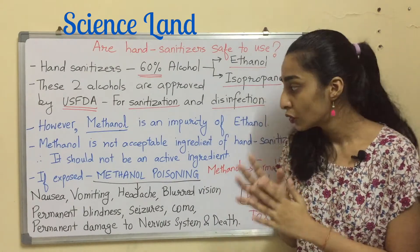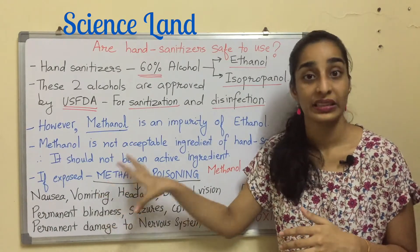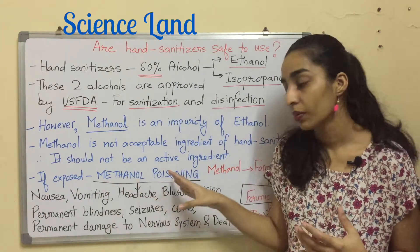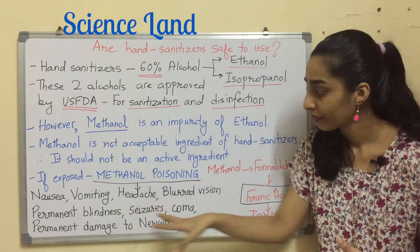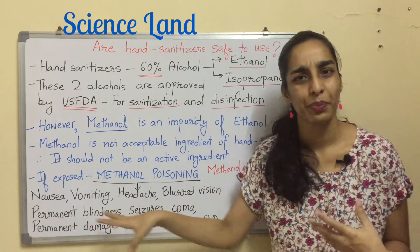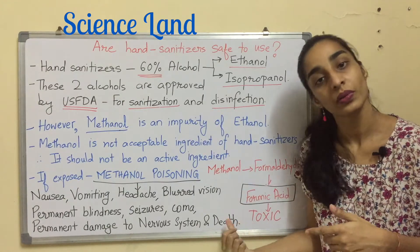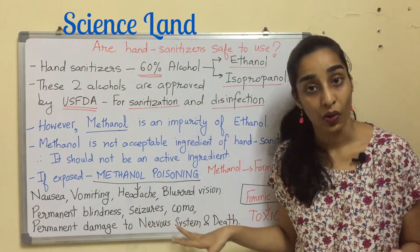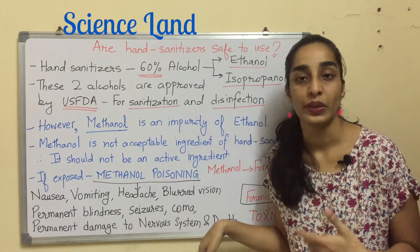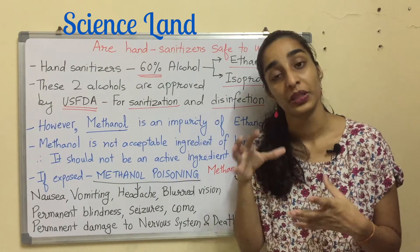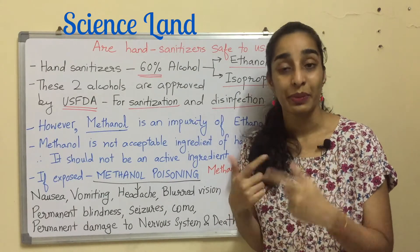If a person is exposed to methanol, the symptoms of methanol poisoning include nausea, vomiting, headache, blurred vision, and permanent blindness — permanent blindness because the optic nerve is damaged by formic acid. Other symptoms include coma, permanent damage to the nervous system, and eventually death. Even a small quantity of methanol is very toxic to the human body.